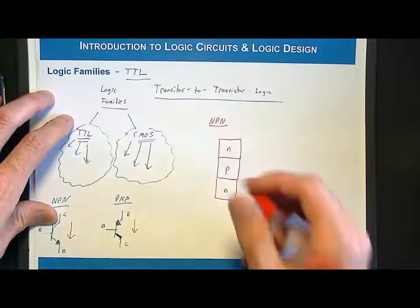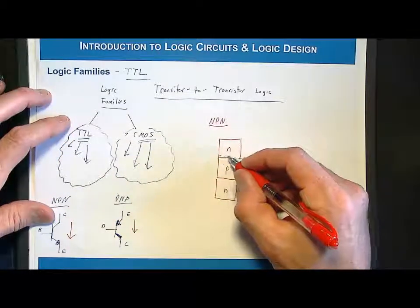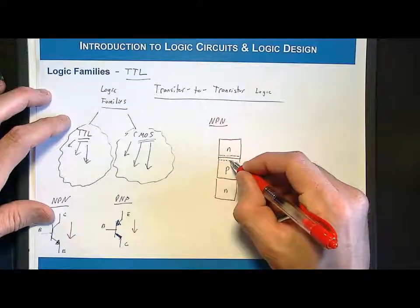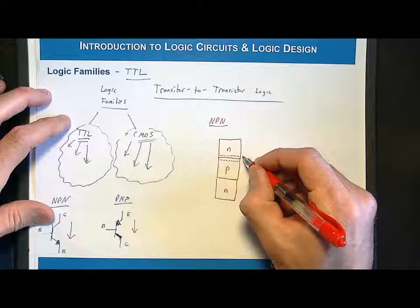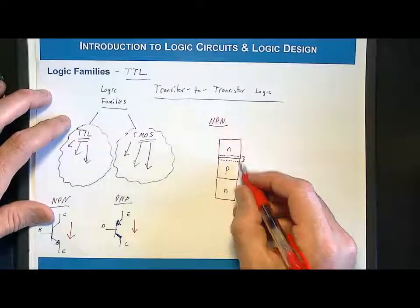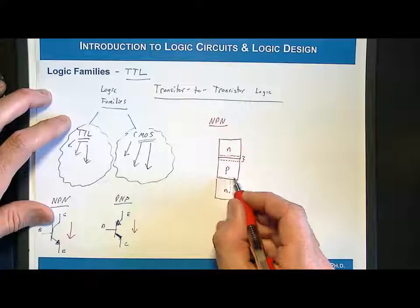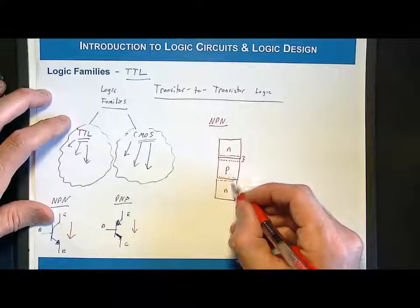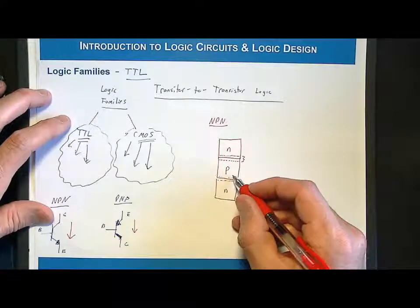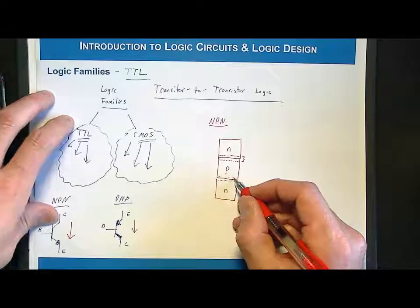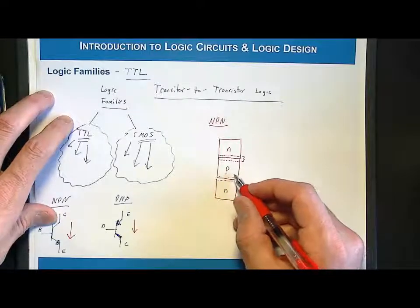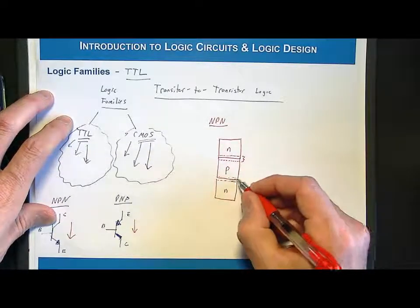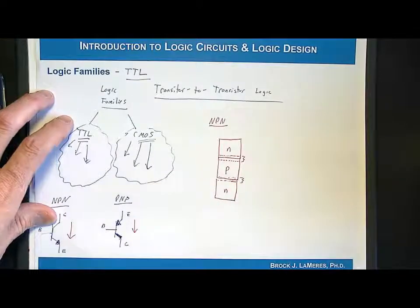These junctions form where two materials of different types are connected together. This junction forms a region where current is not going to flow inherently. The electrons move this way, the positive charges move that way, and they form an equilibrium. Positive charge is surrounded by negative charge so it doesn't know which way to go, so it stays put. Negative charge is surrounded by positive charge, and so on.